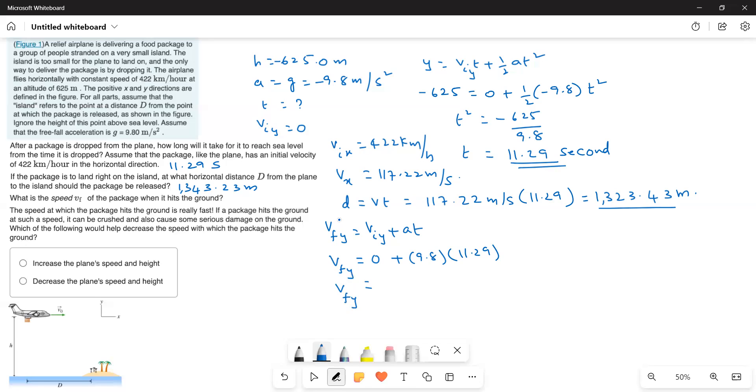This gives v_fy a value of, so this is falling down. So, it should be negative. So, the value will be negative 9.8. So, the value will be 110.64 meters per second downward direction.